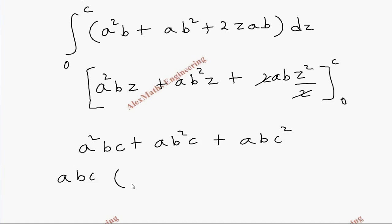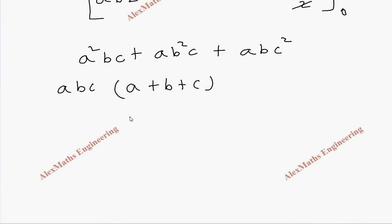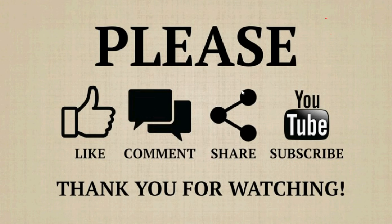We find LHS = RHS = abc(a + b + c). Hence the Gauss divergence theorem is verified.